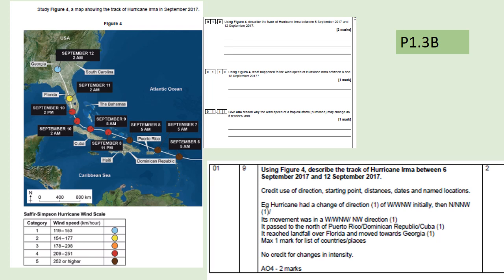For question 1.10, what happened to the wind speed? Looking at the key, blue is category 1 at 119–153 km/h and brown is 252 km/h — so it's simply gone down. For question 1.11, give one reason why the wind speed of a tropical storm may change: a hurricane gets its energy from warm water over 27°C. If warm water is removed it has no energy source. Secondly, land, buildings, and mountains create friction that slows the hurricane down.